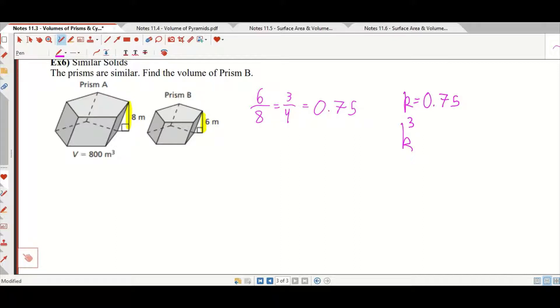And what it's saying is that the volume is going to be k to the third times smaller for prism B than prism A. So that's 0.75 cubed, which is 0.421875. That is, prism B is 0.421875 times the volume of prism A. So the volume of prism B is going to be 800 meters cubed, which is the volume of prism A, multiplied by k to the third power, 0.421875. Which is 337.5 meters cubed.